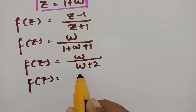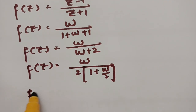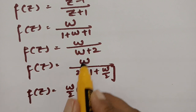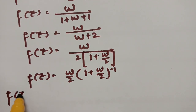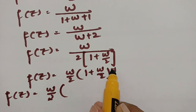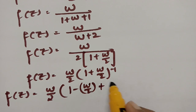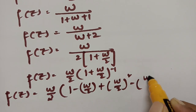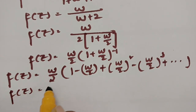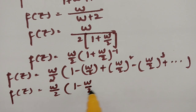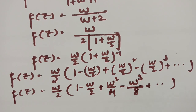Now f(z) = (W/2) · (1 + W/2)^(-1), bringing the denominator to the numerator as inverse. According to the binomial theorem expansion, (1+x)^(-1) = 1 minus W/2 plus (W/2)² minus (W/2)³ plus and so on. And therefore f(z) = (W/2) · (1 minus W/2 plus W²/4 minus W³/8 plus and so on).